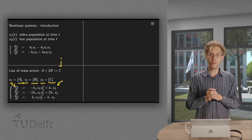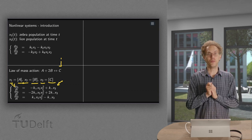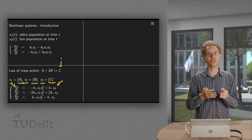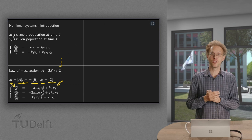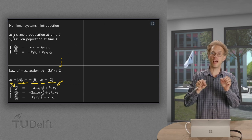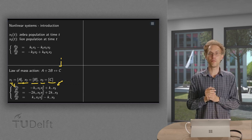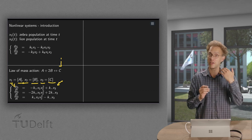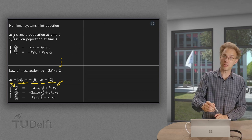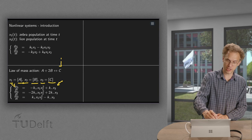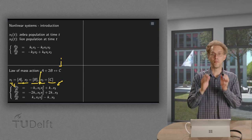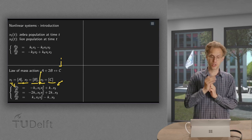So how much do we lose? Well, we have A plus 2B, so we get a reaction as soon as one A meets two B's. So an A, B, and another B have to meet. That's roughly proportional to the concentration of A times B times B. That is what's called the law of mass action, and it's modeled like this: minus k times x1 times x2 squared.